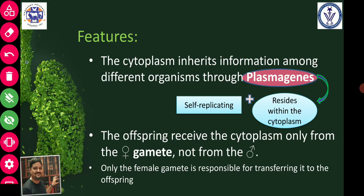The cytoplasm inherits information with the help of plasma genes — genes which are located in the plasma, not in the nucleus. That is why they are called plasma genes. Plasma genes reside within the cytoplasm and have the property of being self-replicating.